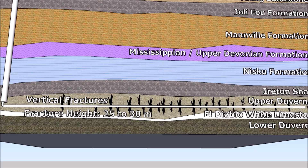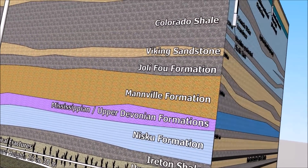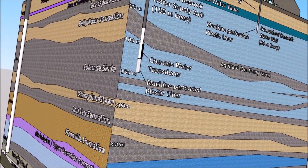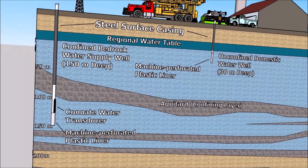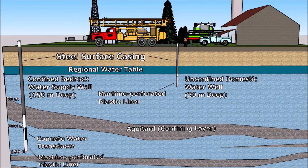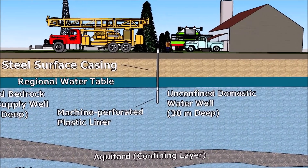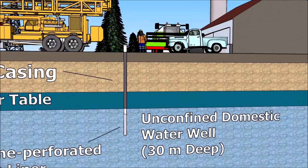But first, let's define some basic hydrogeology terms. What is an unconfined aquifer? An unconfined aquifer lacks confining units, and the water table forms the upper boundary. The water table of an unconfined aquifer is equal to atmospheric pressure.